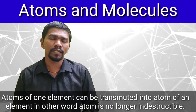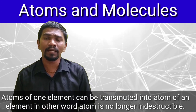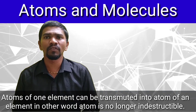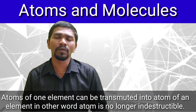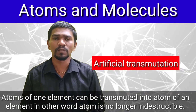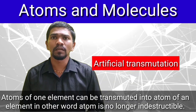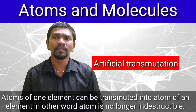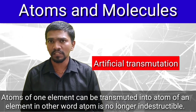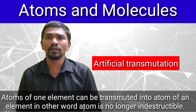The next postulate is: an atom of one element can be transmitted to the atom of another element by means of artificial transmutation. That means an atom can be changed into another atom — it cannot be created, neither destroyed, but it can be changed.